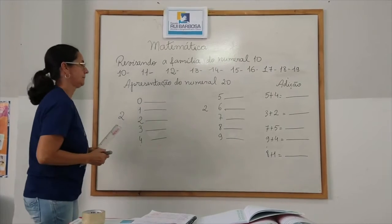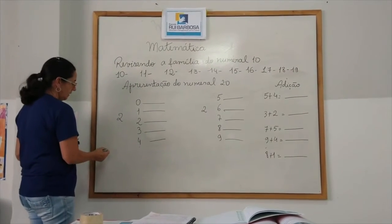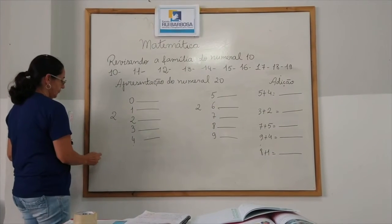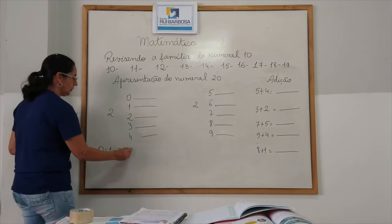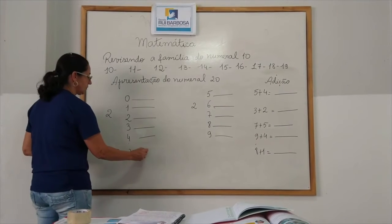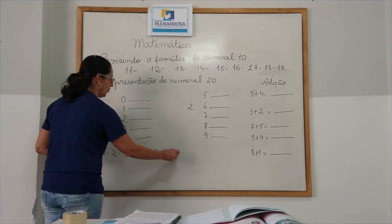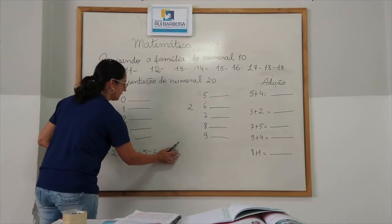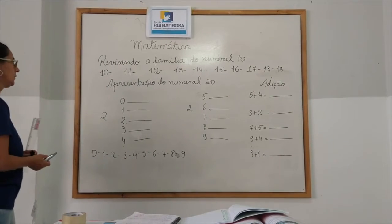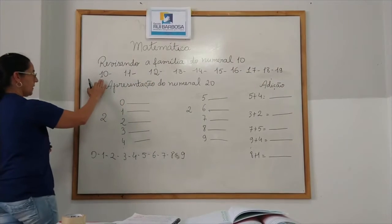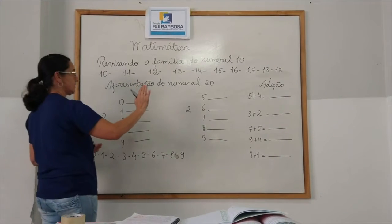Depois do 10, para ficar mais fácil, a Sandra vai escrever aqui do 0 ao 9 novamente. 0, 1, 2, 3, 4, 5, 6, 7, 8, 9. A gente já aprendeu que a família do 10, eu começo a formar com 1 na frente porque eu chego.